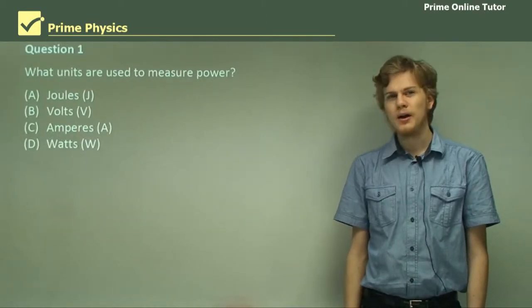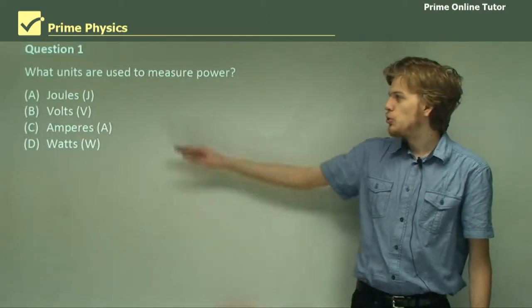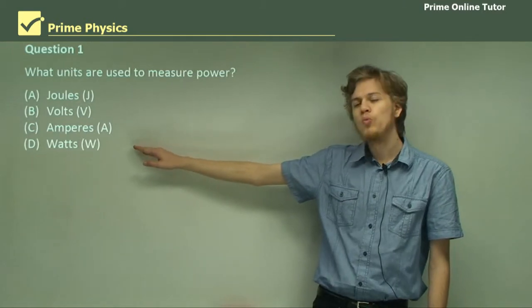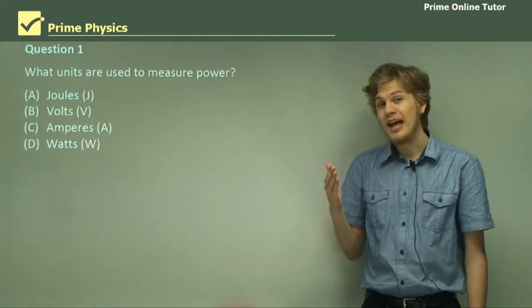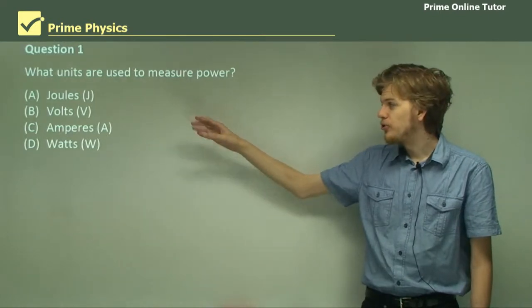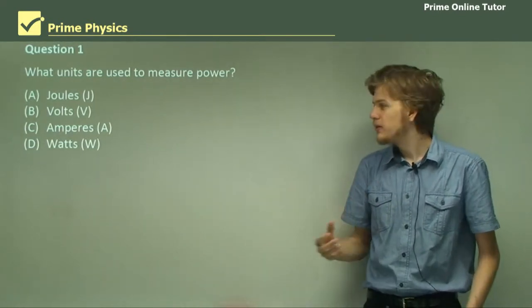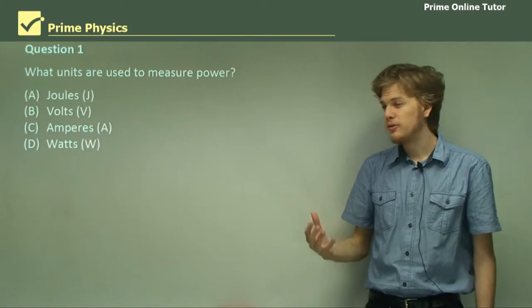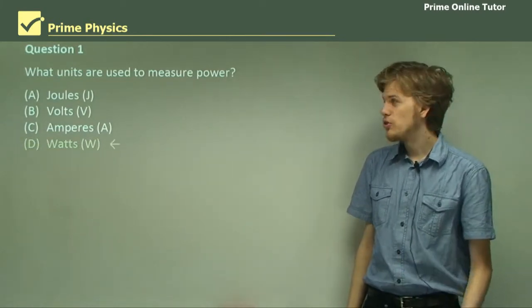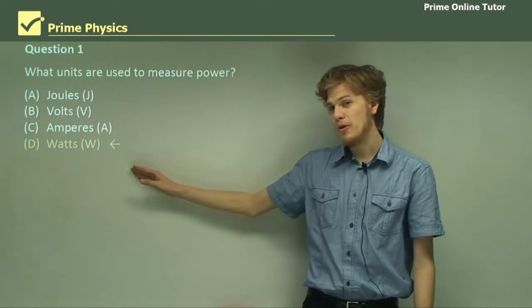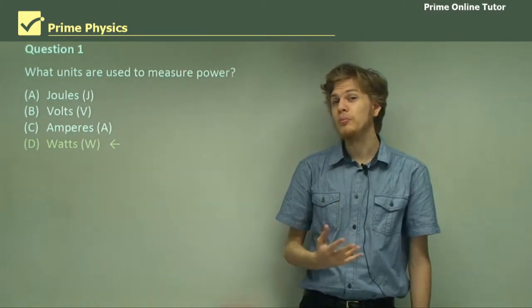What units are used to measure power? Joules, volts, amps, or watts? Now, joules are used to measure energy. Volts are used to measure voltage. Amperes are used to measure current. And watts are the only one left, so these must be what are used to measure power. We use the symbol W for them.